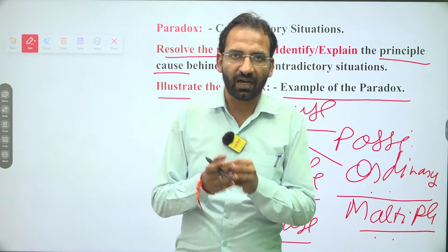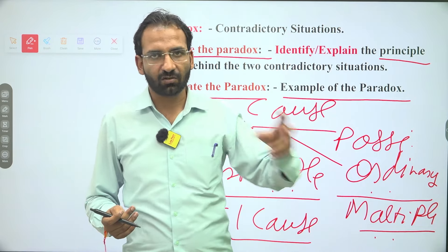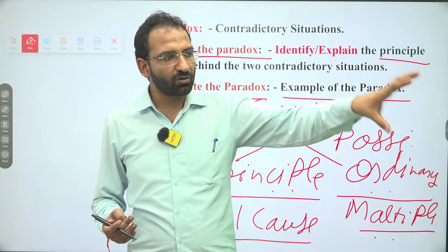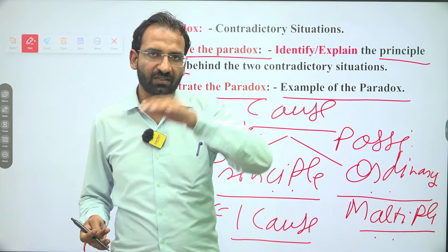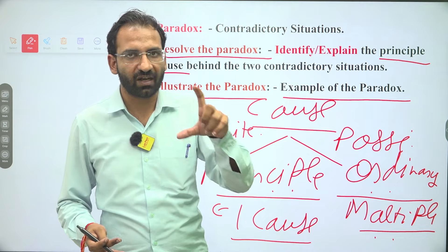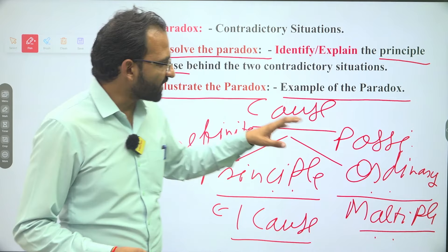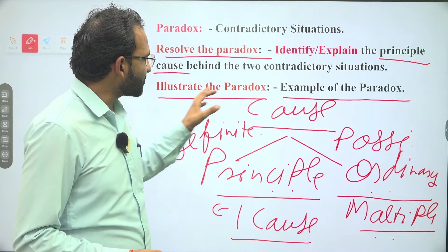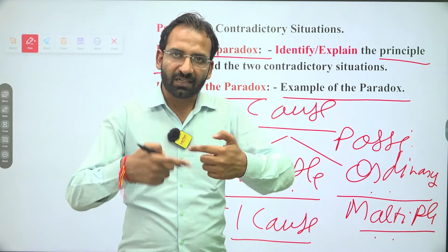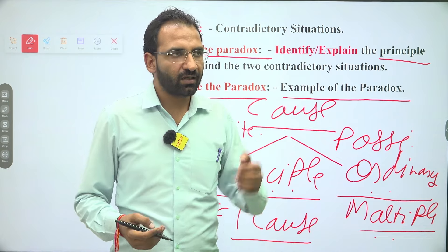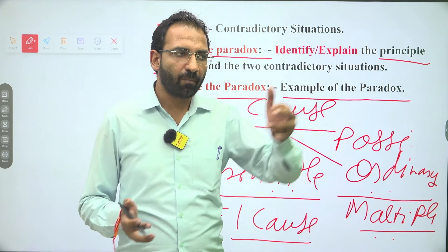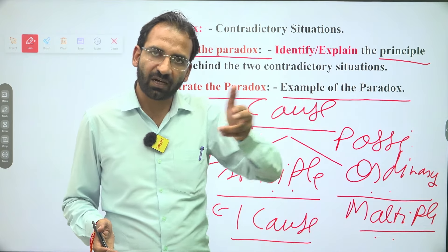You will have a question: which of the following states the parallel reasoning stated in the passage? Parallel reasoning means: in the context you have an argument in the passage, and in the options you find which one follows the same reasoning — out of the box. Illustrate the paradox is similar, but the options can be both within and outside the passage.